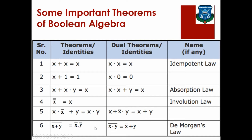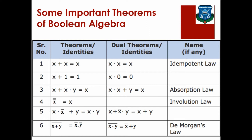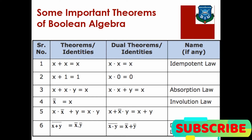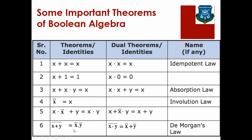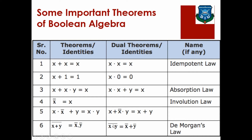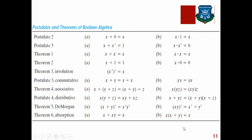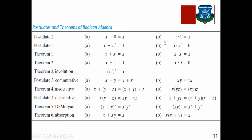You need to remember De Morgan's theorem. If we have a bar over (x plus y), that means the bar rises and becomes x-bar into y-bar. Similarly, if x into y has a bar over it, then the bar rises and becomes x-bar plus y-bar.